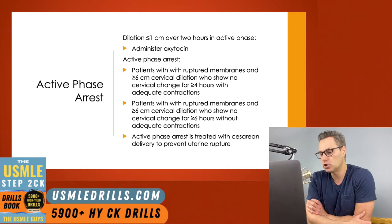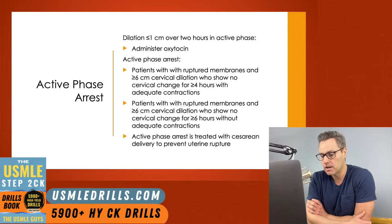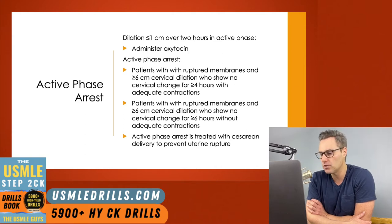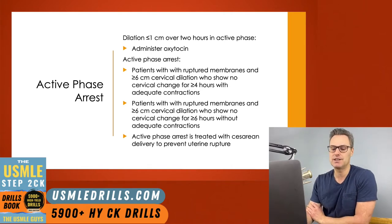If the patient has ruptured membranes and 6 centimeters or greater cervical dilation with no cervical change for four or more hours with adequate contractions, the patient is in active phase arrest. Similarly, if there is no cervical change for six or more hours without adequate contractions, that also constitutes active phase arrest. To avoid complications such as uterine rupture, the treatment for active phase arrest is cesarean delivery.